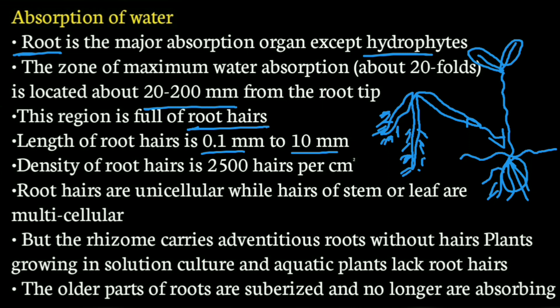Root hairs are unicellular, while hairs of stem or leaf are multicellular. Root hairs have about 2,500 hairs per centimeter square. Root hairs are unicellular and eukaryotic, with a well-defined nucleus. However, the rhizome carries adventitious roots without hair, and plants growing in solution culture and aquatic plants lack root hairs.